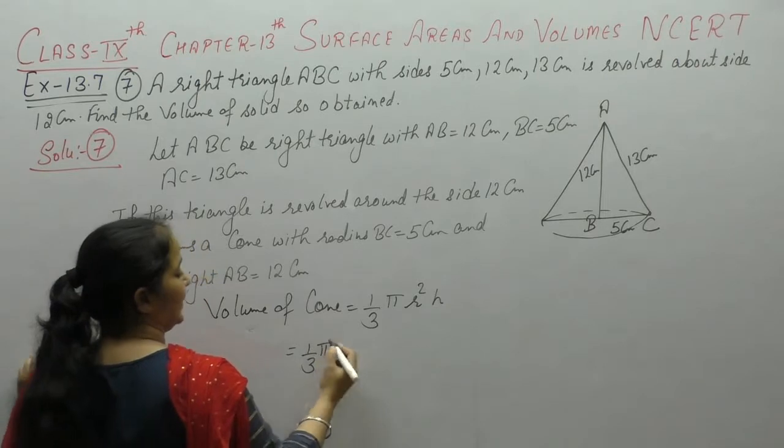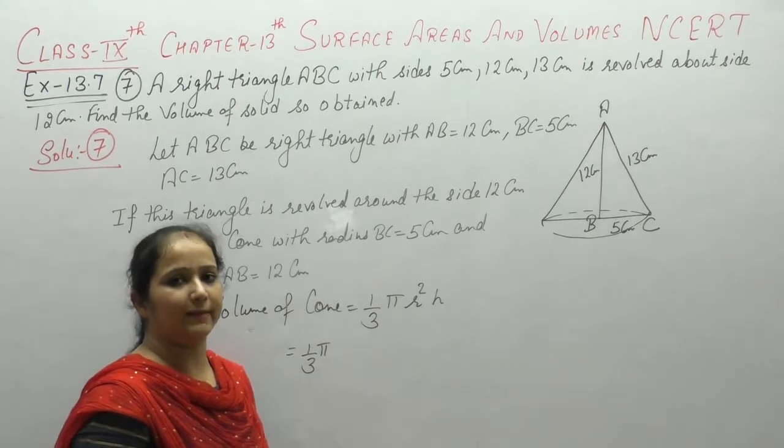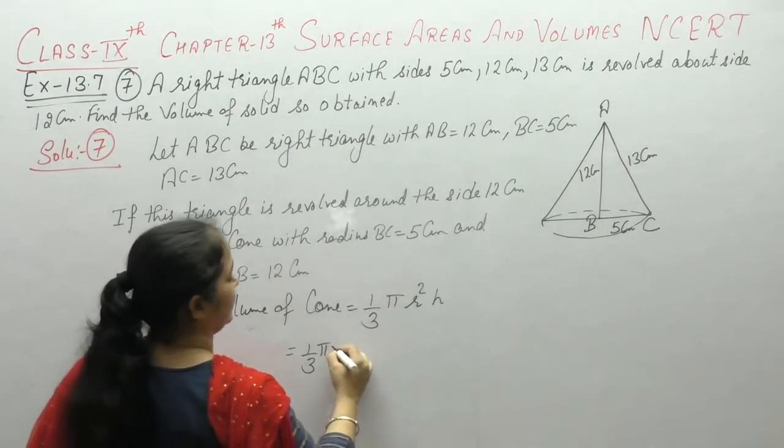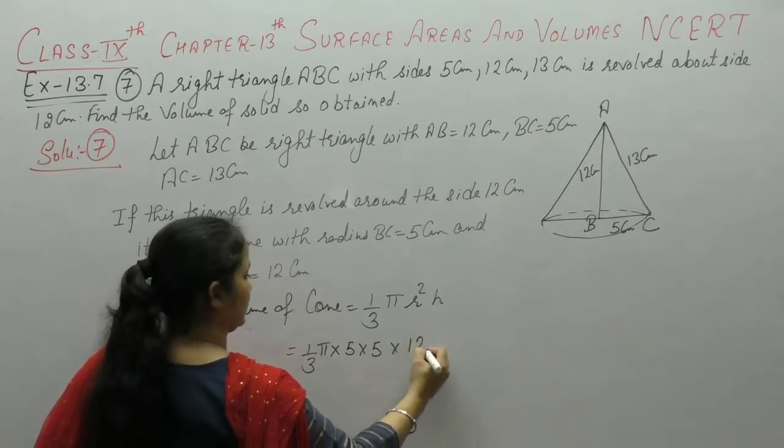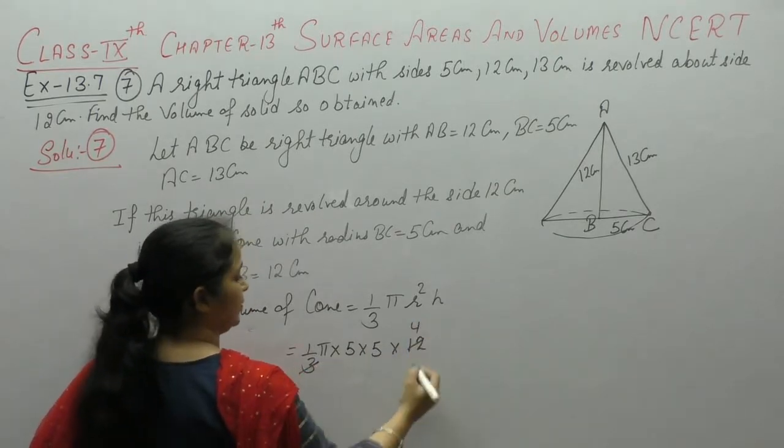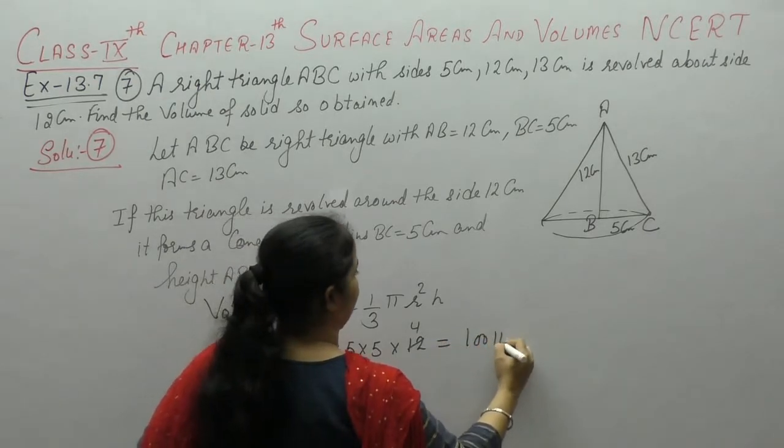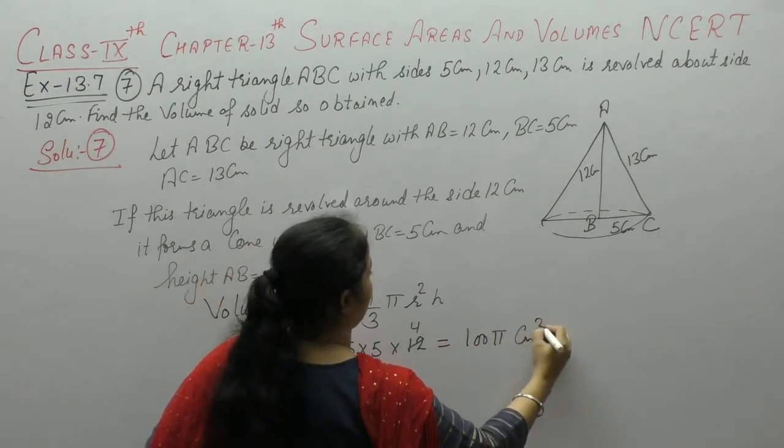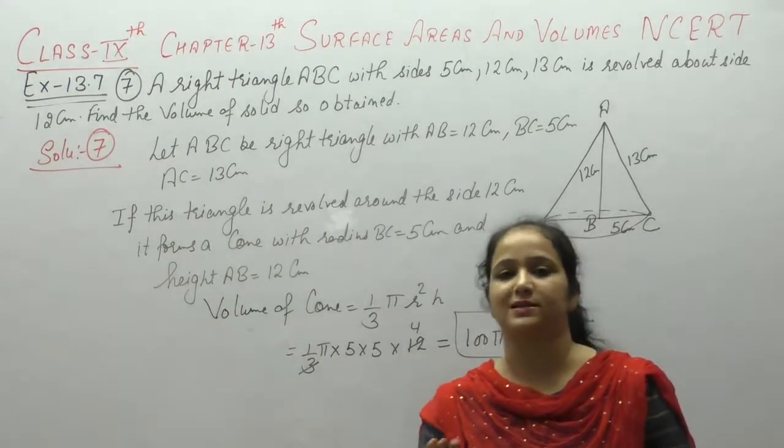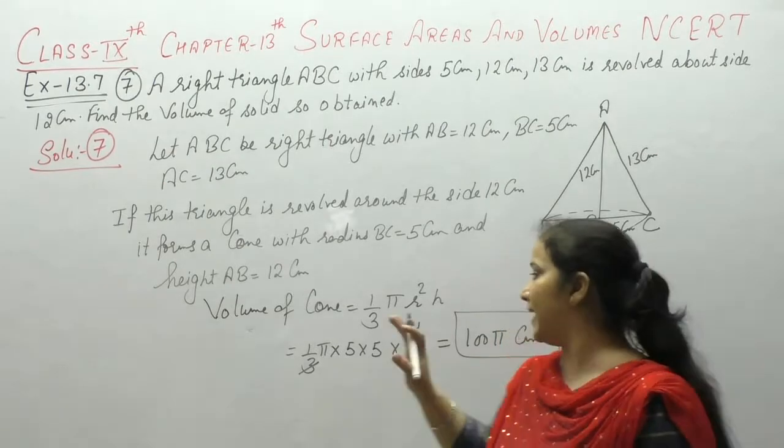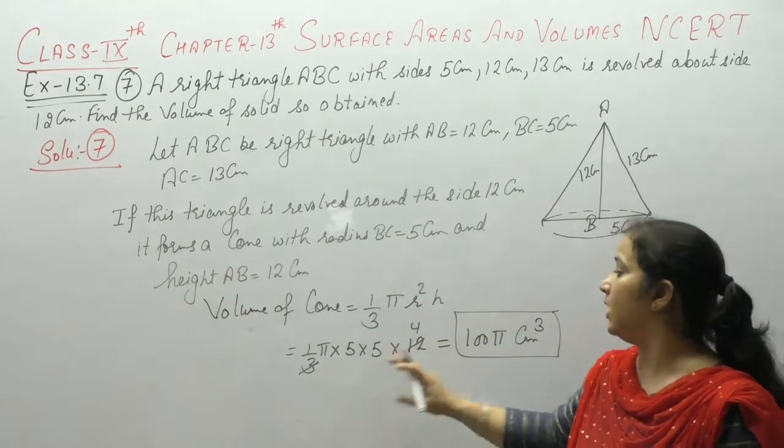Pi ko am nye as it is rakha, chahou to value put bhi kar saakti ho answer, kyunki yaha pe pi me hai, to pi me solve kar lete hai. Radius is 5 and height is 12, 3 fours are 12, 5 fives are 25 into 400. Pi cm me tha, so cm cube. Aap chaahou, kyunki exam me aapko answer to given nai ho ga, aapki book me answer pi me hai, is liye maine pi me chhoj diya answer ko.